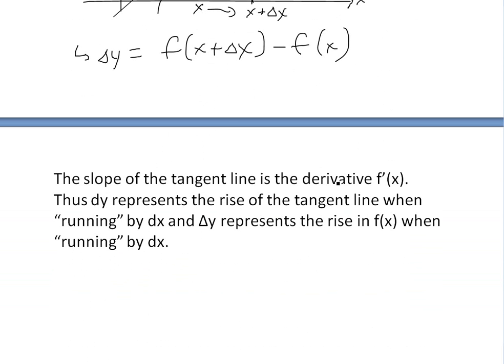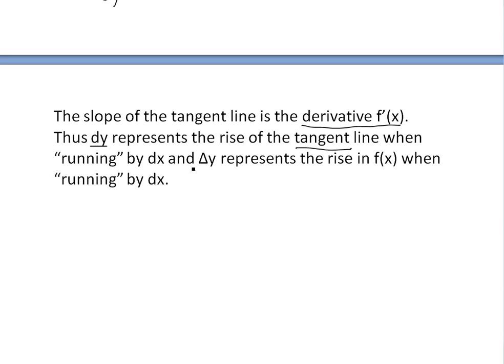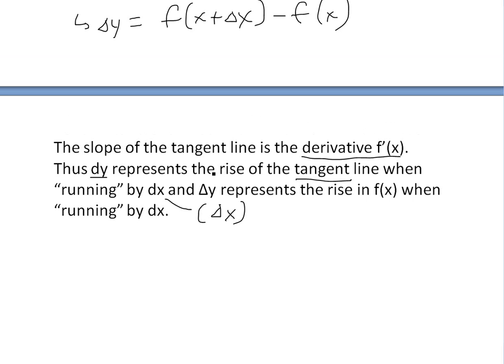The slope of the tangent line is the derivative, f prime of x. Thus, dy, or differential y, represents the rise of the tangent line when running by x, the same thing as delta x. And basically, because remember, the tangent line, the slope is just the rise over run.